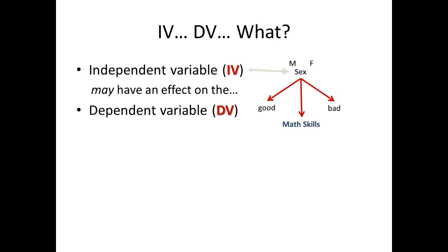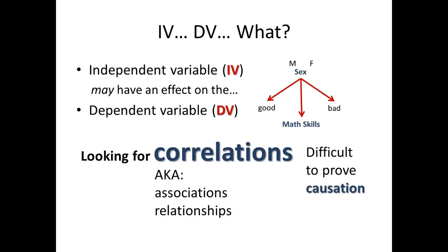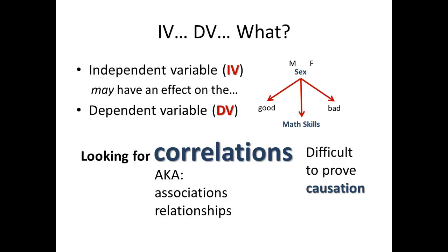In this case, the variable of sex would be the independent variable because the answer on the math skills part might be dependent upon their answer to the sex question. Math skills then would be the dependent variable. We are looking for correlations — also called associations or relationships between variables. It's extremely difficult, if not impossible, to prove causation. If you were to prove causation, you would say that being male causes the change in the answer to math skills, rather than that being male correlates with a difference in their answers on the math skills question.